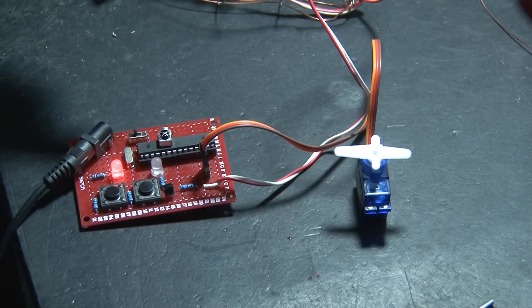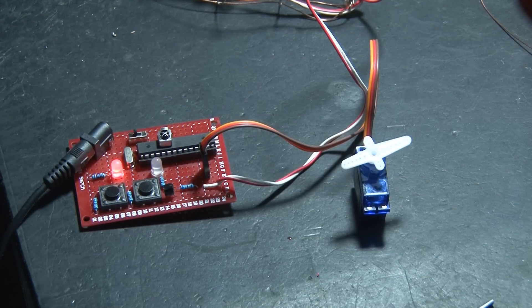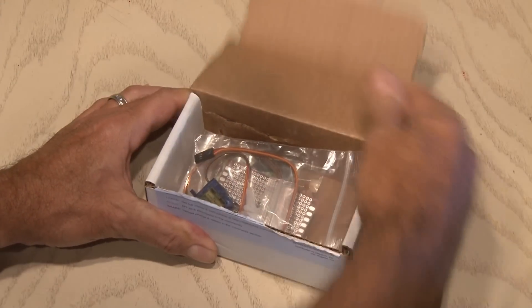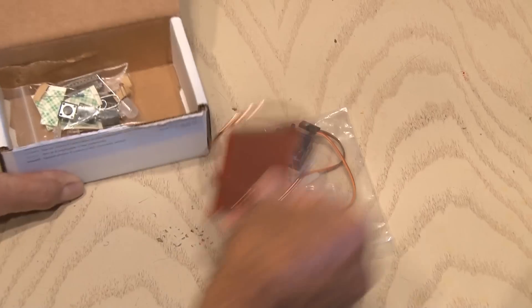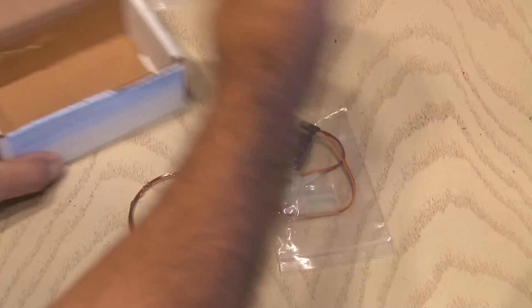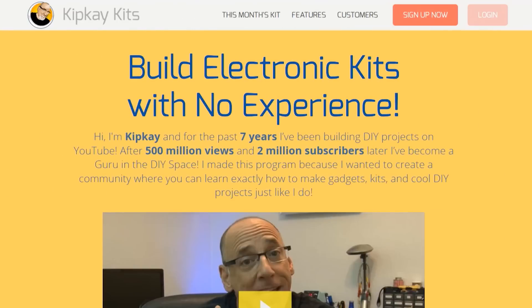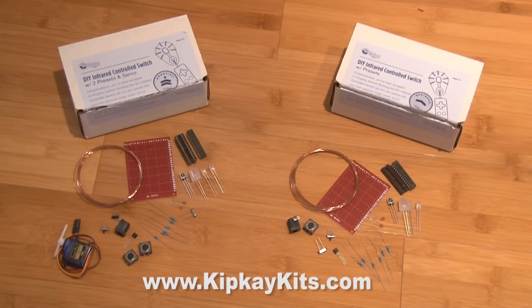So what would you program the infrared controlled thingy to do? Well, first you gotta build it. Many of my fans ask me all the time where to get the parts for my projects. Well, I now have one easy solution, it's kipkaykits.com. The beginner kit comes with an infrared control and an LED light bulb just like the video. You can actually swap out the light bulb to any small electronics to turn it on and off wirelessly.